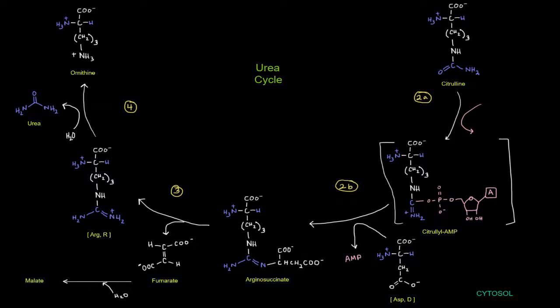Okay. So now we've got this citrulline out here over to the top right, and then we're going to have the second step of the urea cycle that's actually broken up into parts A and B. And they're both going to be catalyzed by arginosuccinate synthetase. Okay. So the synthetase is going to produce arginosuccinate, which we see here.